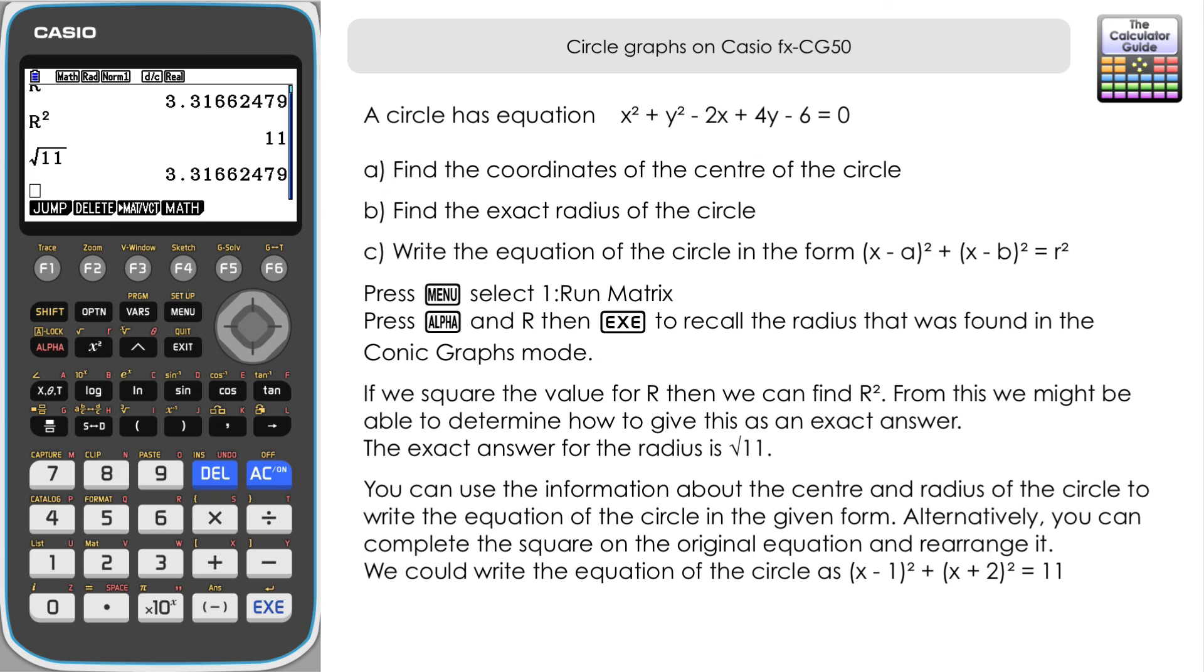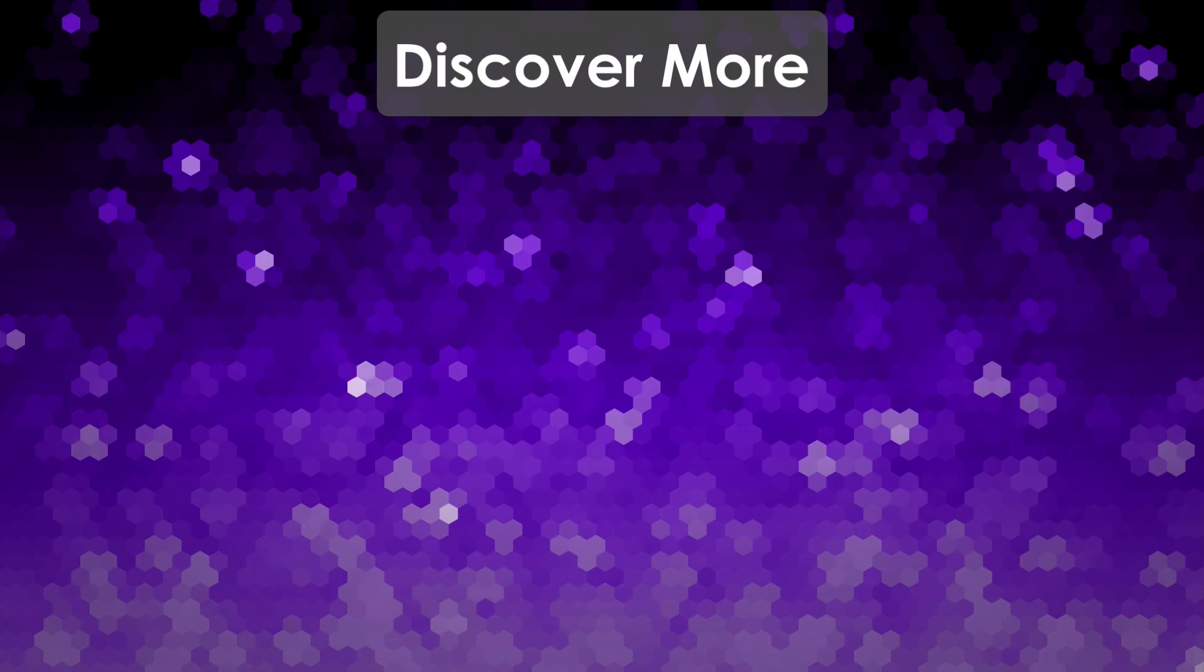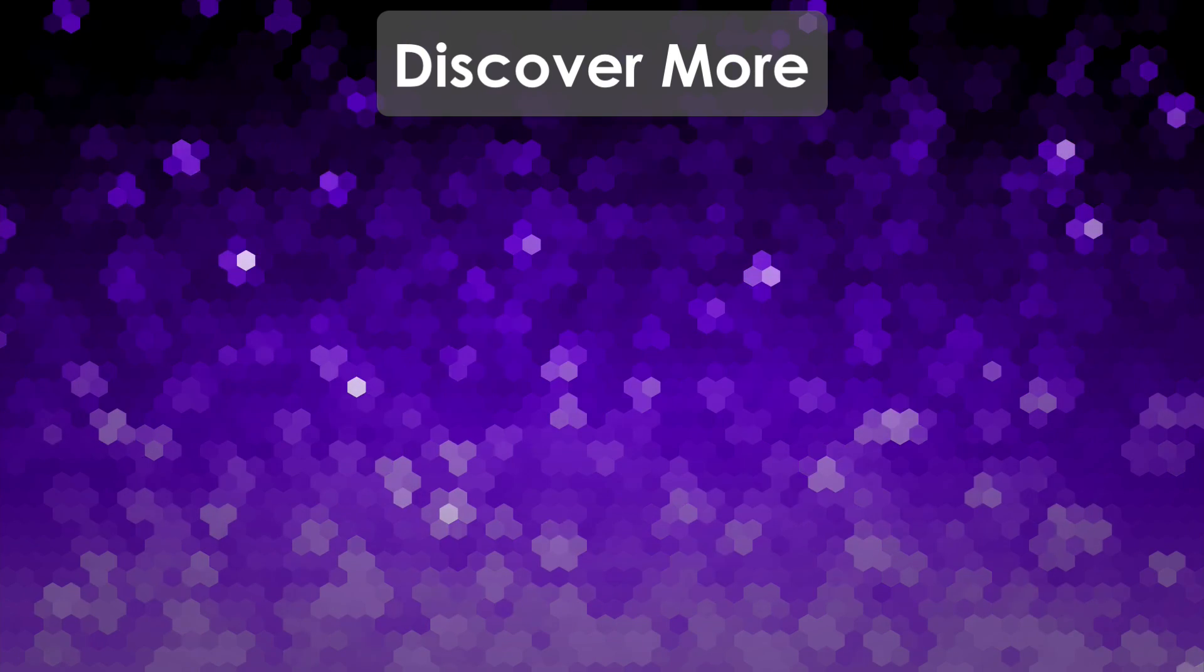We can use the CG50 to draw circles. That can help us with our sketches because we can find our information such as the y and x intercepts. We can also find the centre and the radius as well of the circle and that can help us rewrite the equation in a different form. Or simply just label them on a sketch or a graph as well that we have to draw. Don't forget to like and also subscribe for future videos. But that's it for this video. Thank you very much for watching and I will see you next time on the calculator guide.